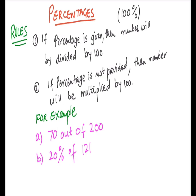There are two basic principles for the calculation of percentages. The first one is: if a percentage is given, then the number will be divided by 100. And in another case, if the percentage is not given, then the number will be multiplied by 100.